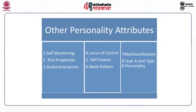Number three is authoritarianism. People with this trait are highly rigid in their positions. They strictly follow rules and regulations and want all work done in conformity with a strict environment. Their beliefs are strong and they follow the mechanism of formal authority. They usually prefer an autocratic or directive leadership style.